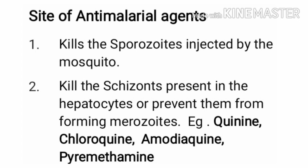The second site is to kill the schizonts present in the hepatocytes or prevent them from forming merozoites. Examples of drugs active at this stage are quinine, chloroquine, amodiaquine, and pyrimethamine.